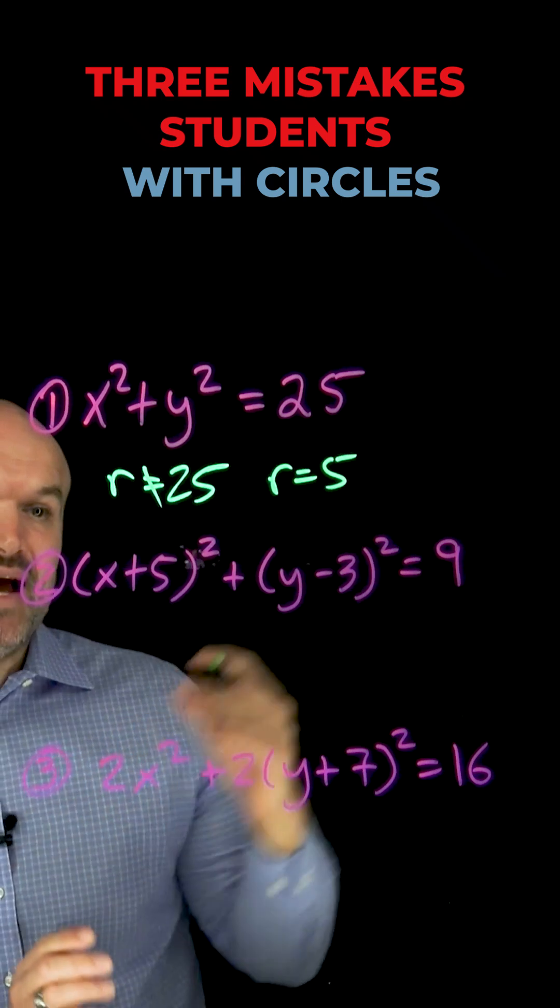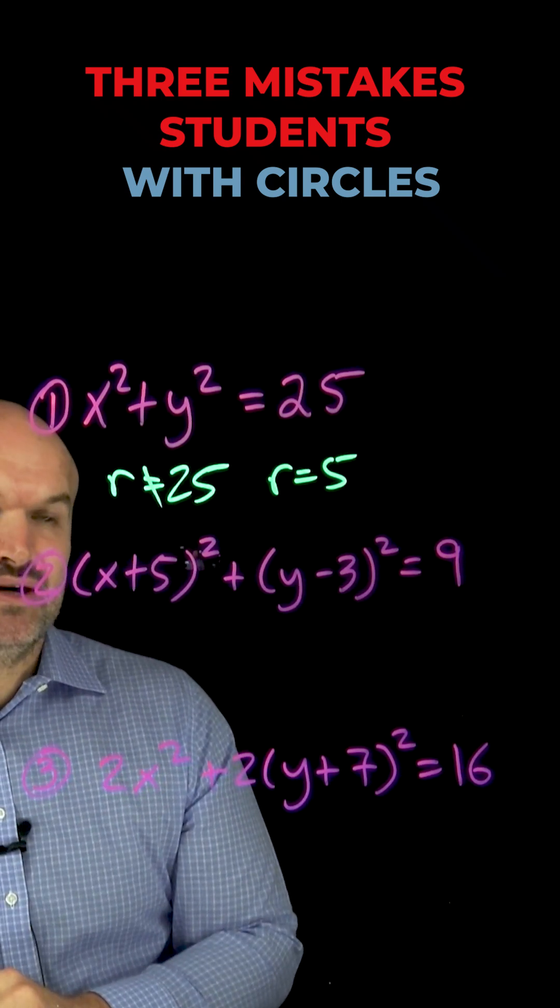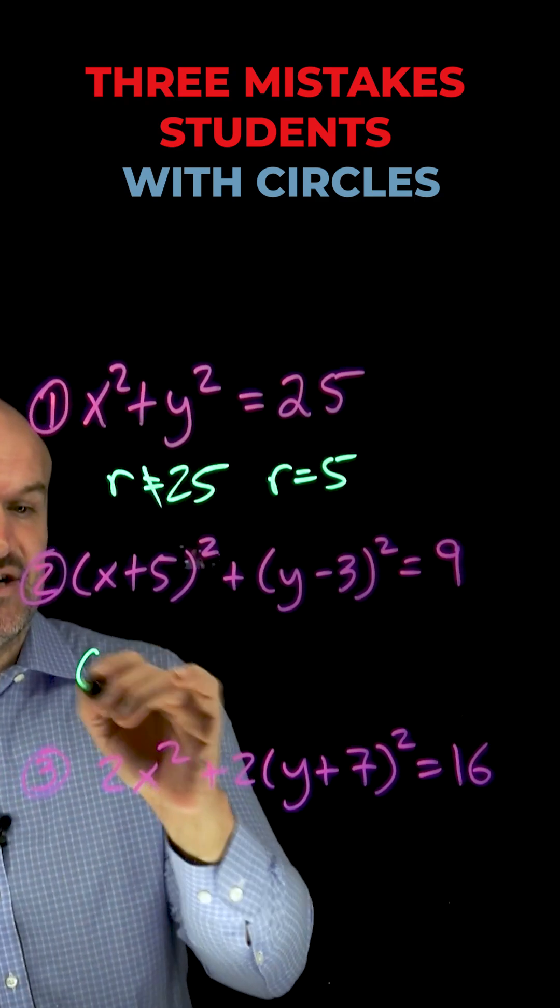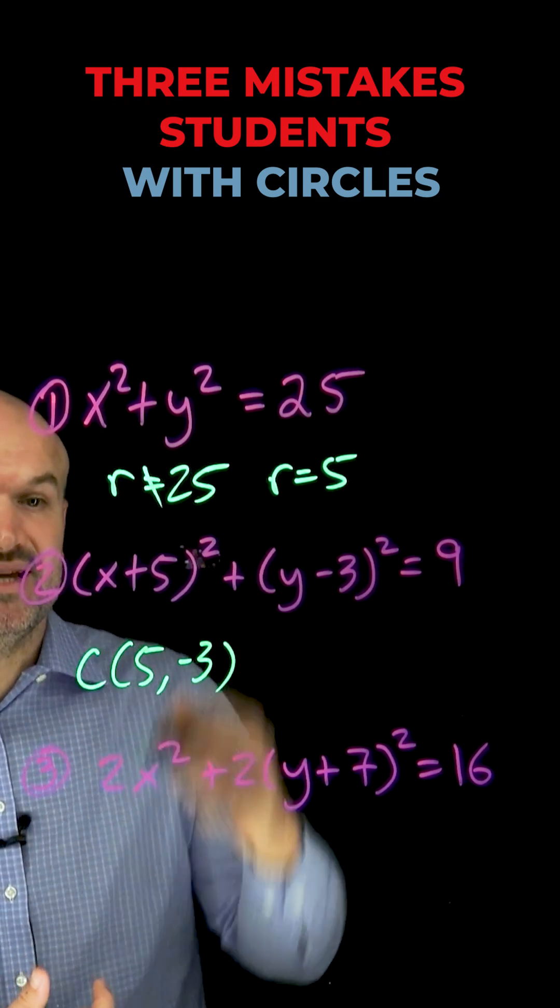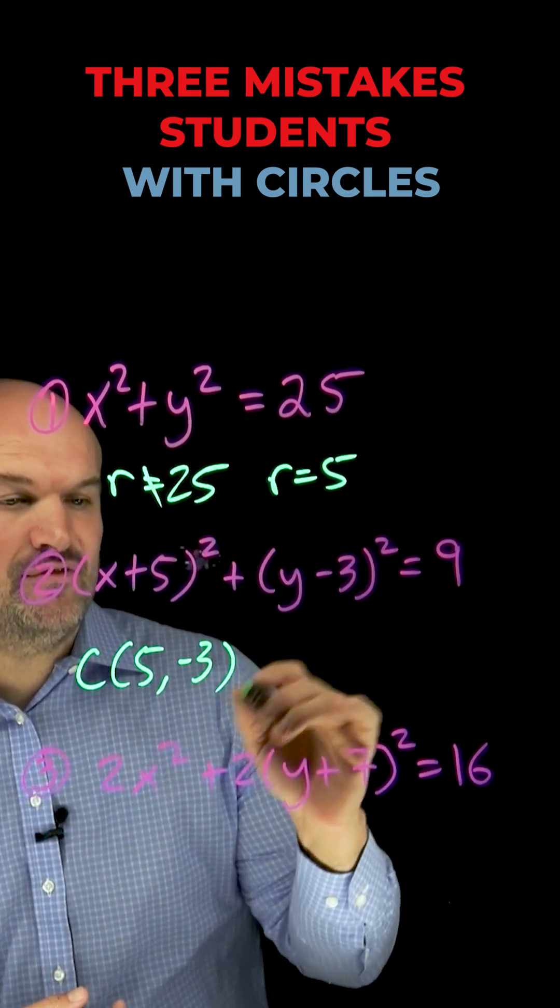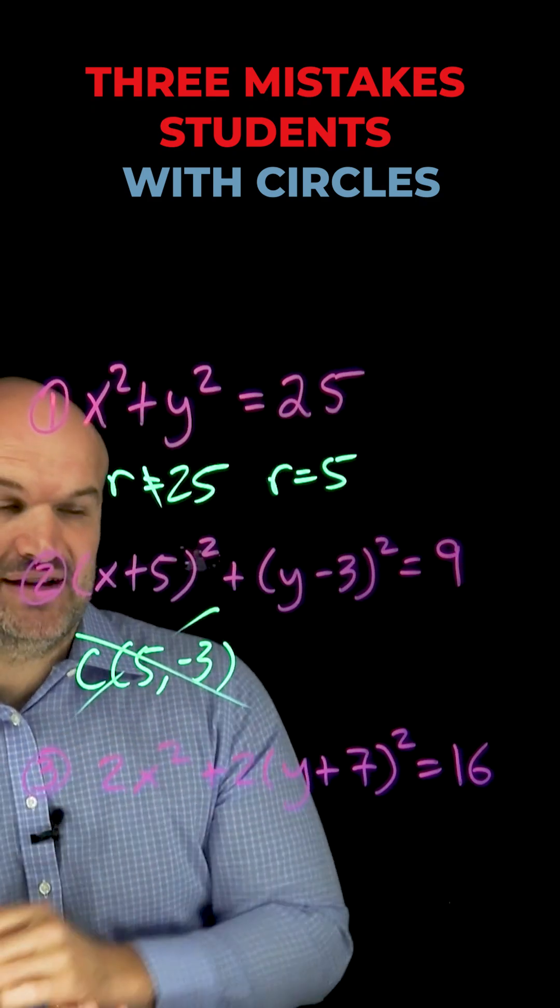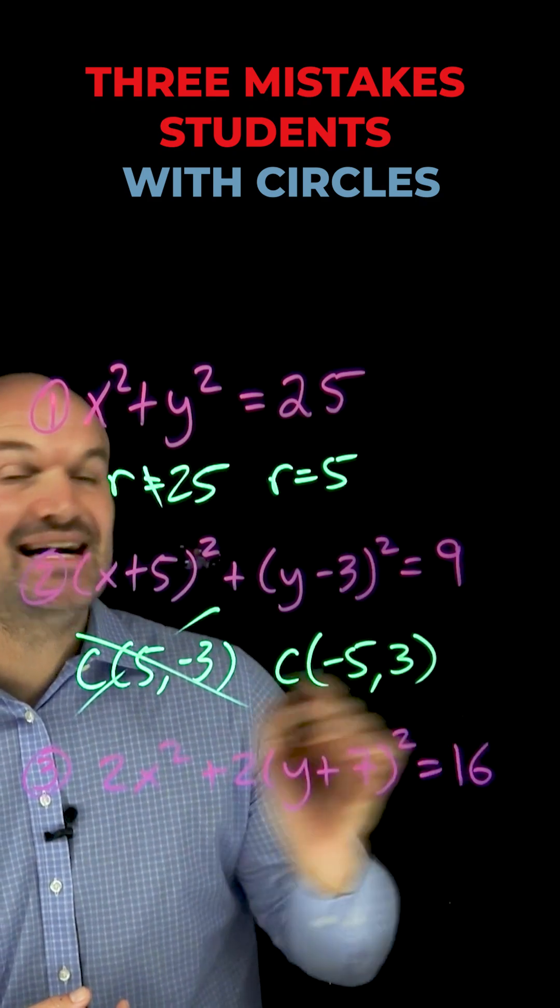The next mistake is when we have a center off of the origin. So we have x plus 5 squared plus y minus 3 squared equals 9. So a lot of students will say that the center is going to be at 5, negative 3. No, no, no. Remember, guys, the formula is x opposite of h squared plus y opposite of k squared. So therefore, the center is not 5, negative 3, but the center is actually negative 5, positive 3.